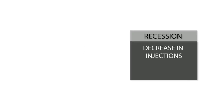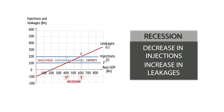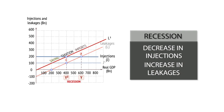Recession occurs when either consumption or injections decrease or leakages increase. Recession occurs when there are sustained decreases in real GDP, usually meaning at least two consecutive reductions in GDP. Recession can follow a reduction in corporate investment or government spending, or through a fall in export sales. Recession can also occur as a result of a rise in savings, higher tax levels, or an increase in import spending.